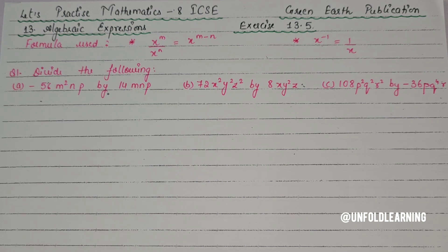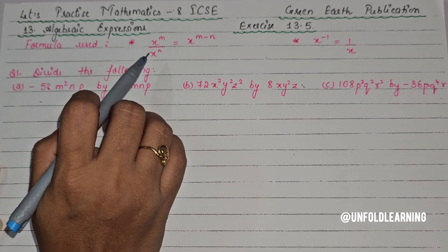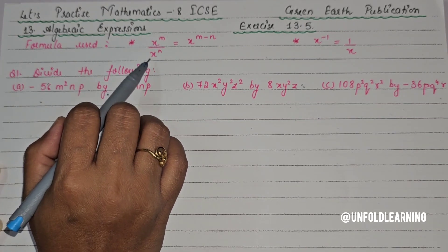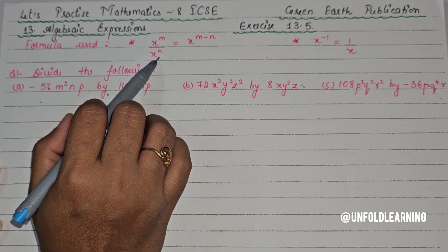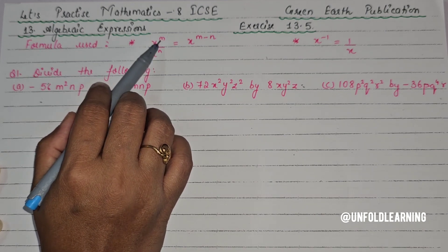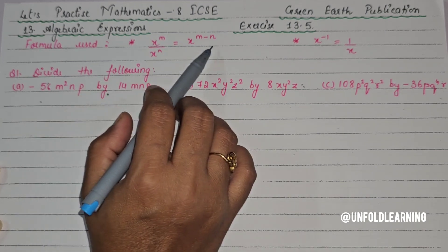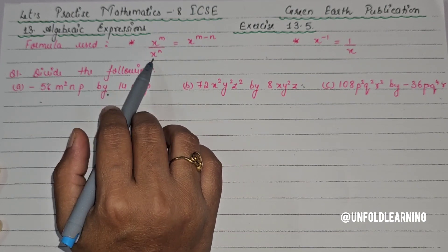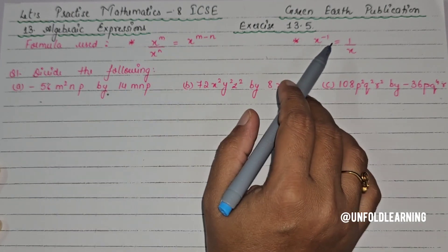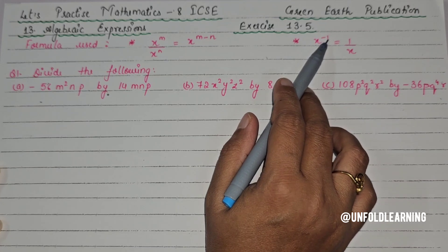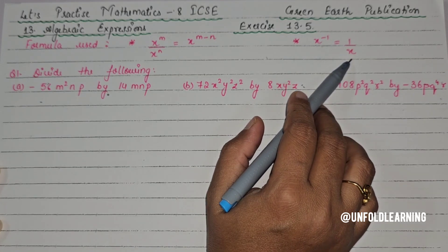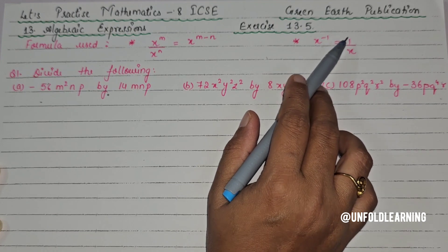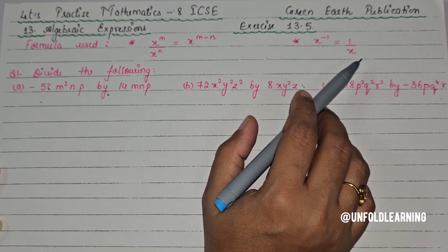In this exercise we will learn the division of polynomials, in which we will use two formulas. x to the power m is the numerator and x to the power n is the denominator — we subtract the powers when the base is the same. If x is to a negative power, then we write 1 upon x.